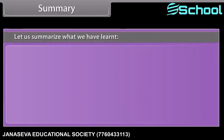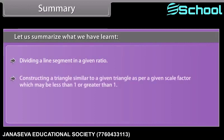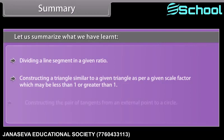Let us summarize what we have learned: dividing a line segment in a given ratio; constructing a triangle similar to a given triangle as per a given scale factor, which may be less than 1 or greater than 1; and constructing the pair of tangents from an external point to a circle.